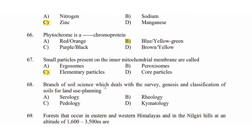Question 68: Branch of soil science which deals with the survey, genesis and classification of soil for land use planning. Option A: serology. Option B: rheology. Option C: pedology. Option D: chymetology. Soil and water relate to each other. The answer is Option C: pedology.